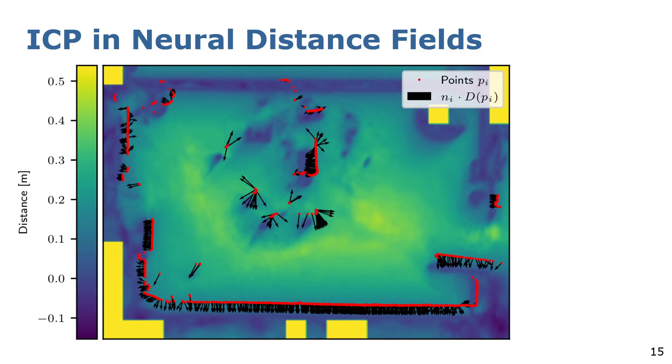After we have constructed the map, we can now try to register a new scan to it. For this, we can use an ICP-based approach similar to classical RGB-D SLAM systems. For the registration, we first compute the gradient of the distance field at each position. This gives us the direction in which the points have to go to reach the closest surface. Now, we can compute how far we have to go by simply evaluating the distance field. This we can then do for all the points and estimate the pose update. We do this iteratively until it converges.